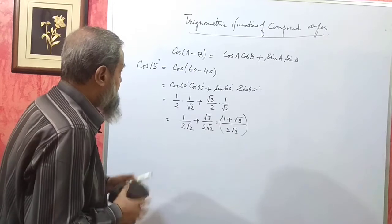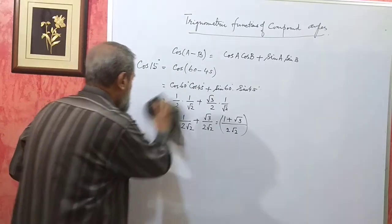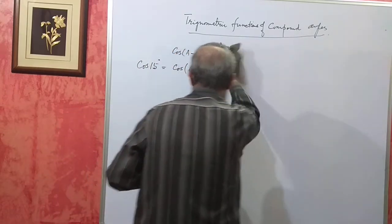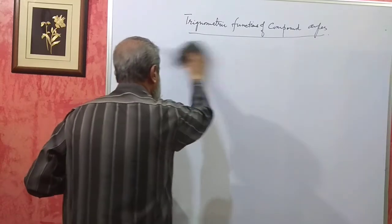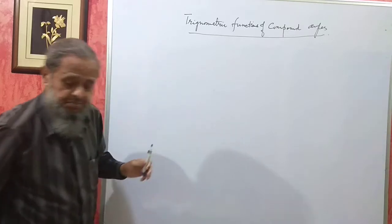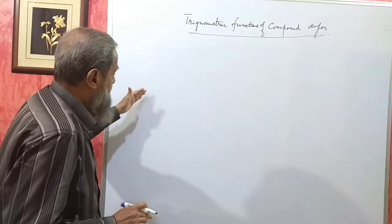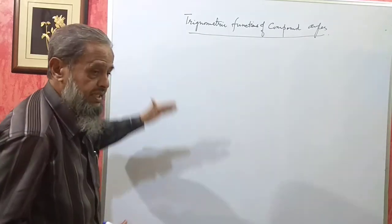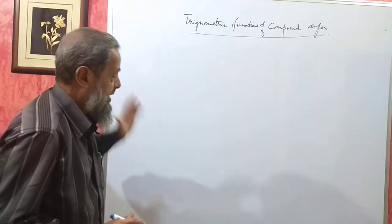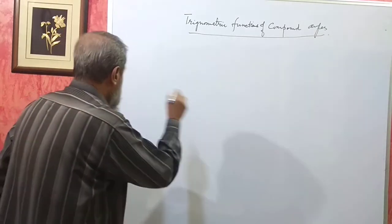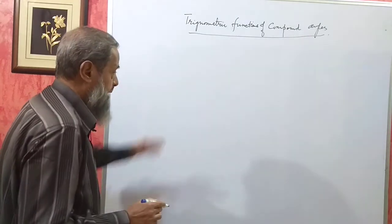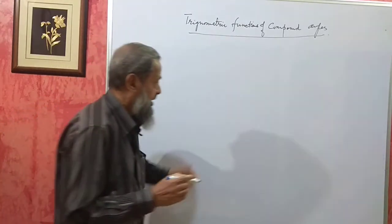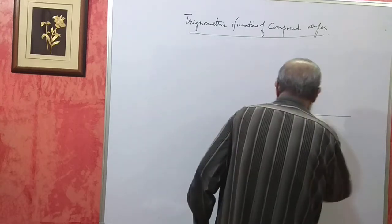Now, these formulae — you will get 6 formulae in compound angles. You may be asked to derive them. Geometrically, these formulae can be derived. That is, sin of A plus B, cos of A plus B, tan of A plus B, then sin of A minus B, cos of A minus B, and tan of A minus B. They can ask us to derive it, and it can be derived geometrically. I will take up the derivation of sin of A plus B, cos of A plus B, and tan of A plus B.